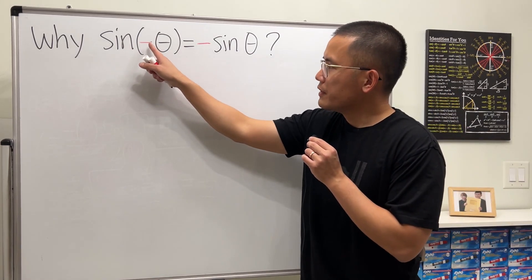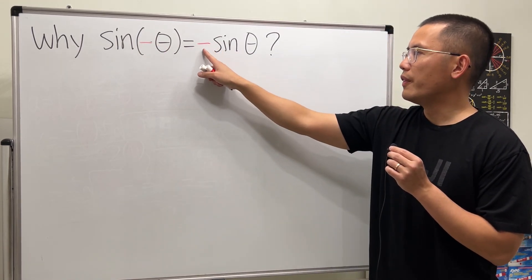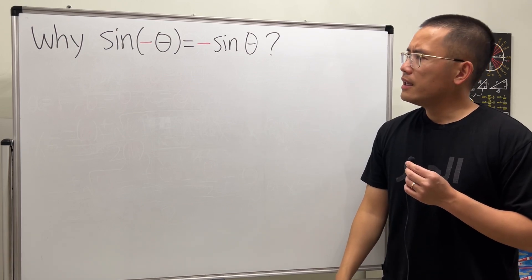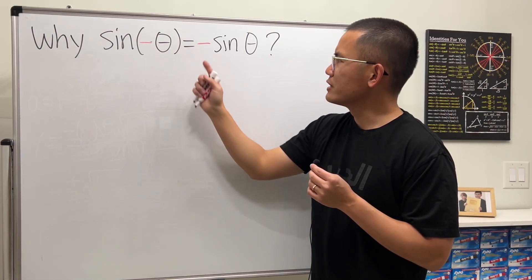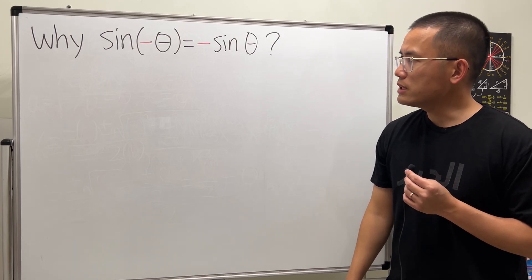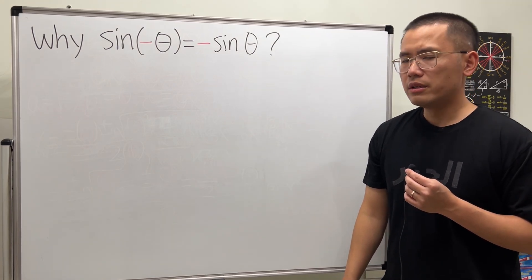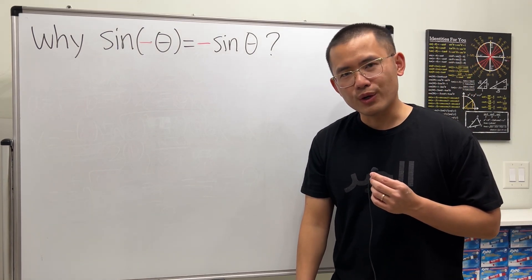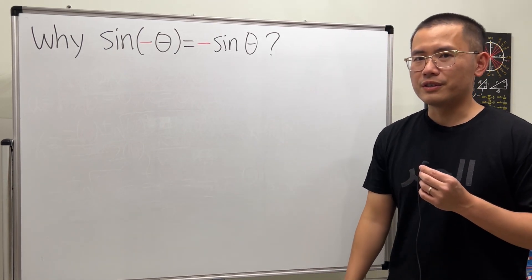Let's talk about why sine of negative theta is equal to negative sine theta. So it looks like we just put a negative on the outside. Is that also the case for cosine of negative theta and tangent of negative theta? Well, we'll talk about this later on. Let's focus on this right here first.